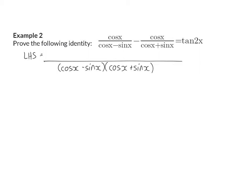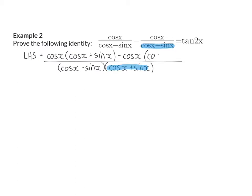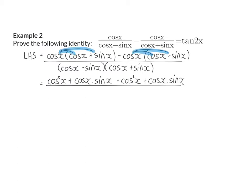I need to change my numerators according to the new denominator. The first numerator was cos x, which was over cos x minus sin x, so it still needs to be multiplied by cos x plus sin x. The second fraction had the numerator minus cos x, and was over cos x plus sin x, so it has to be multiplied by cos x minus sin x. Next, I can simplify by multiplying in the numerator and expanding the two brackets in the denominator. In the numerator, cos² x minus cos² x is 0, leaving cos x·sin x plus cos x·sin x, which is 2 cos x·sin x.